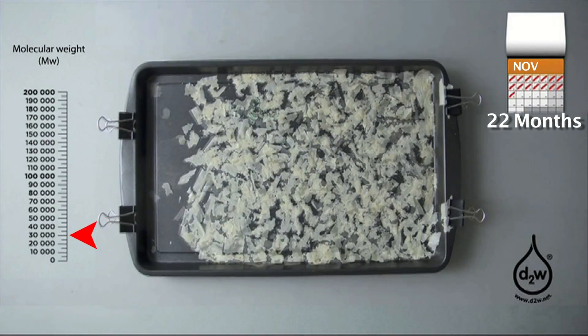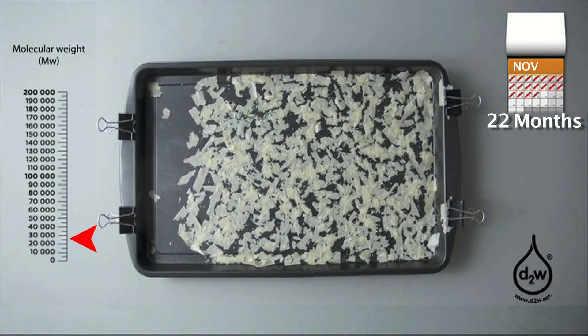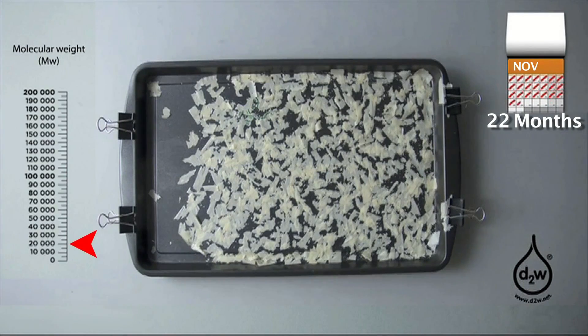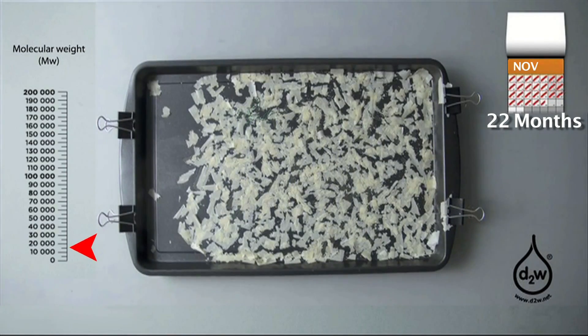Microorganisms which are normally found in the environment can then access the fragments and they are bio-assimilated in the same way as natural wastes such as leaves and straw.